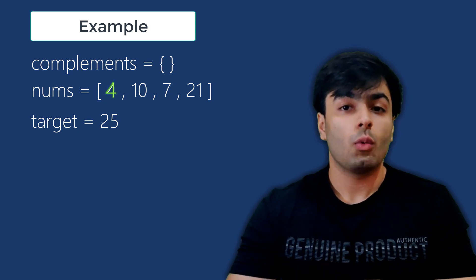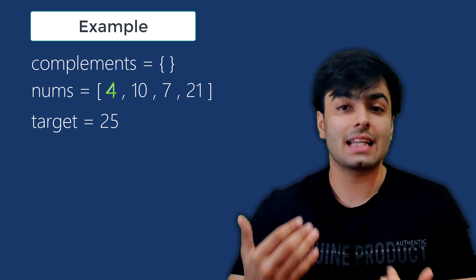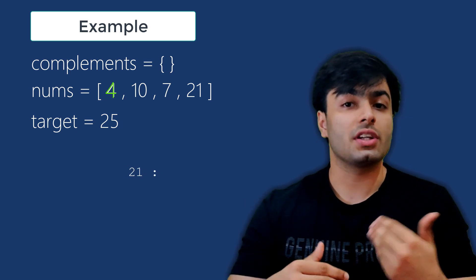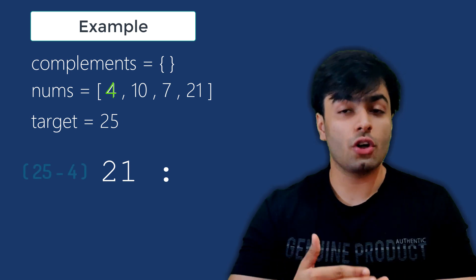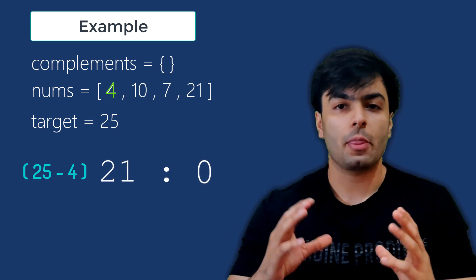We start with the number 4. We can see that this is not one of the keys in our dictionary as the dictionary is empty. Therefore, we can create an element in the dictionary where the key is 21, which is the complement of 4, and the value is 0, which is the index number of 4.